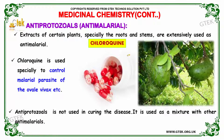Extracts of certain plants, especially the roots and stems, are extensively used as anti-malarials, and these affect and cure the malaria disease. Chloroquine is used specifically to control the malaria parasite of the ovale and vivax types. Antiprotozoals are not used alone in curing the disease; they are used as a mixture with oral anti-malarials.